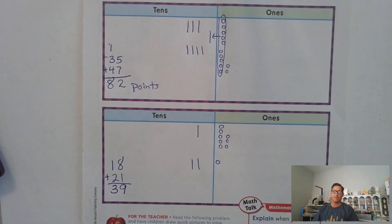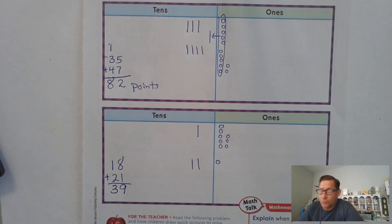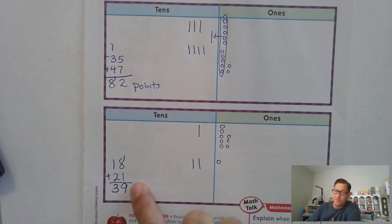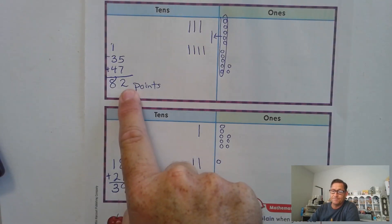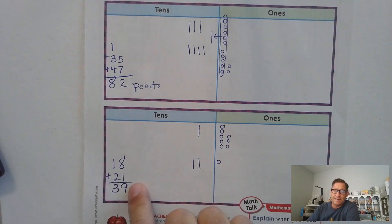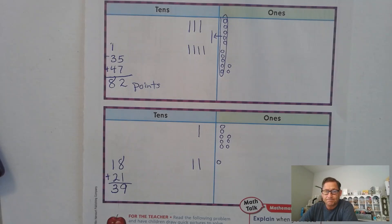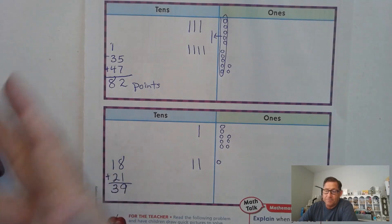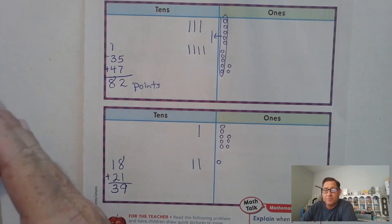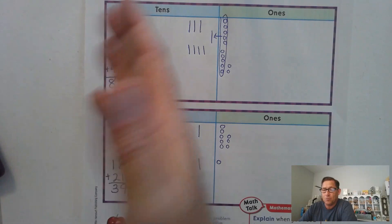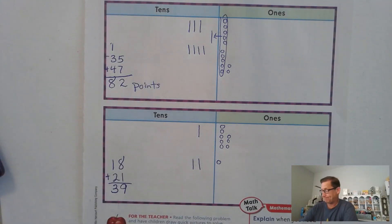So you should be able to explain when you would need to regroup ones at this point. Here we didn't regroup; here we did. This one had 9 ones, this one had 12 ones. How would you explain when you would need to regroup ones? We need to regroup ones anytime we have 10 or more ones. Anything less than 10, we don't need to regroup.